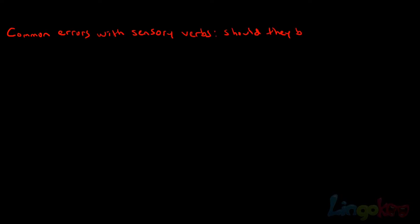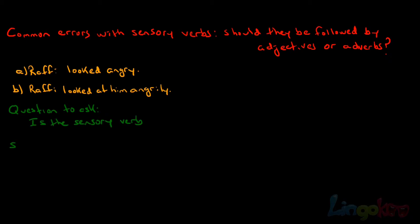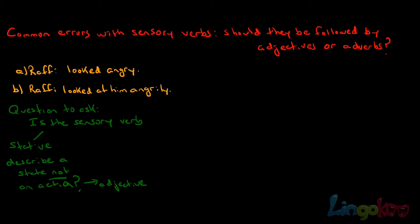What are some common errors with sensory verbs? Mistakes happen when figuring out if they should be followed by an adjective or an adverb. The key question is: is the sensory verb a static verb? If it describes a state, not an action, follow it with an adjective. If it's a dynamic action verb, follow it with an adverb.